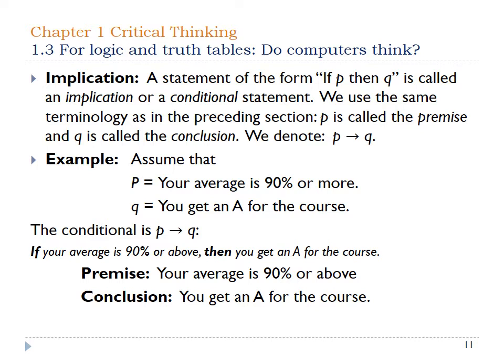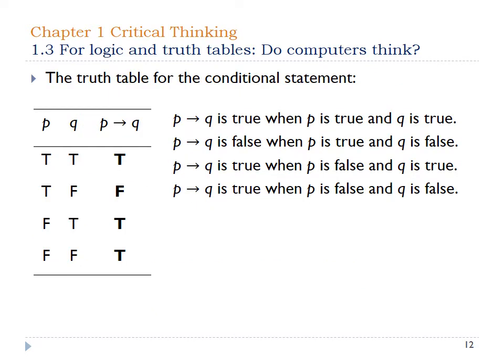Let's look at what the truth table looks like for this one. It looks a little different from the others. If P is true and Q is true, the whole statement is true. However, if P is true and Q is false, the statement is false — because if this, then that can't be false. Here's where it gets tricky: if the premise is false, it actually doesn't matter what the conclusion is. Once the premise is false, the other piece doesn't really matter — they're always going to be true at the end.